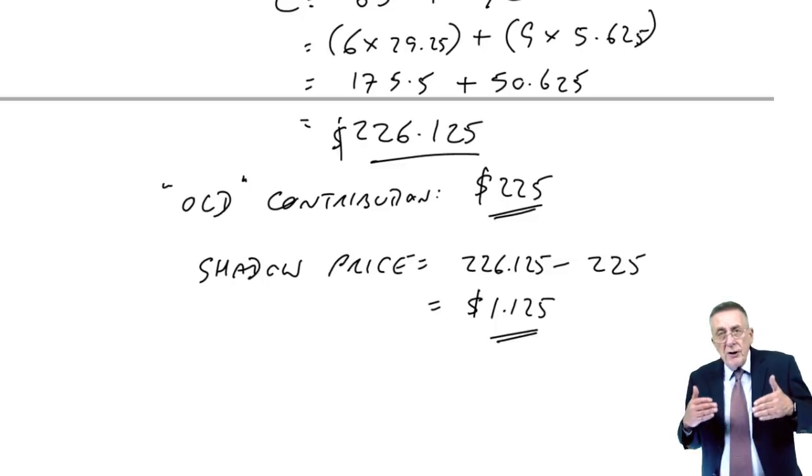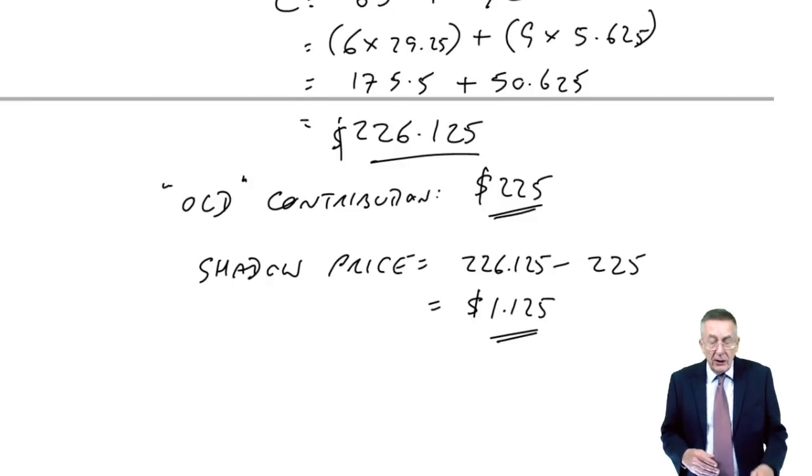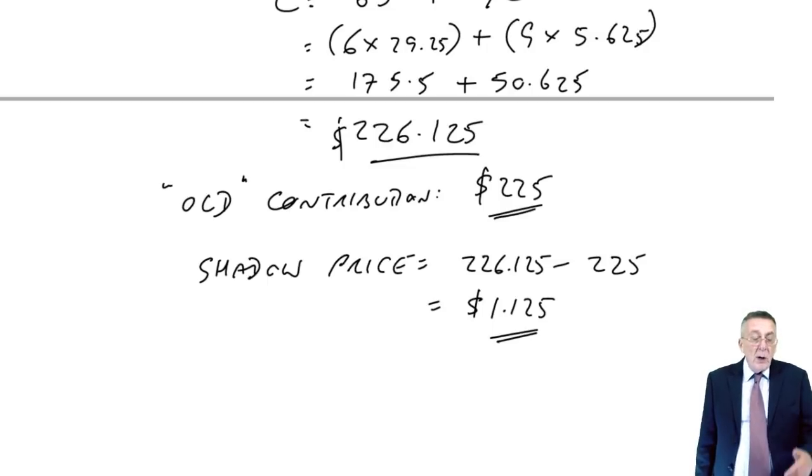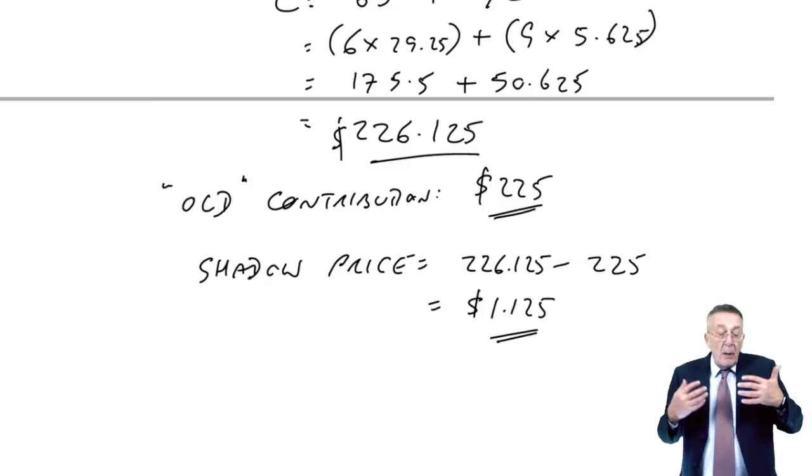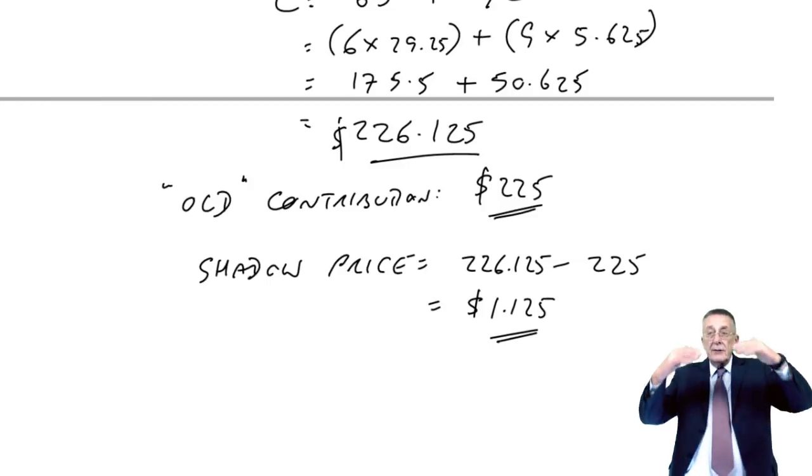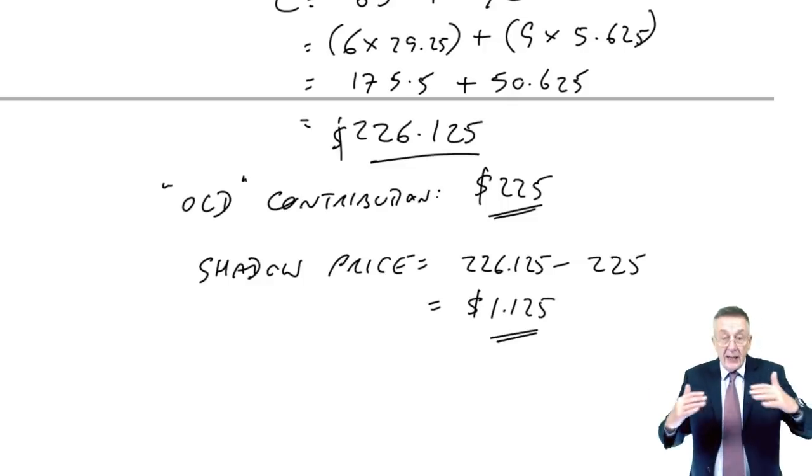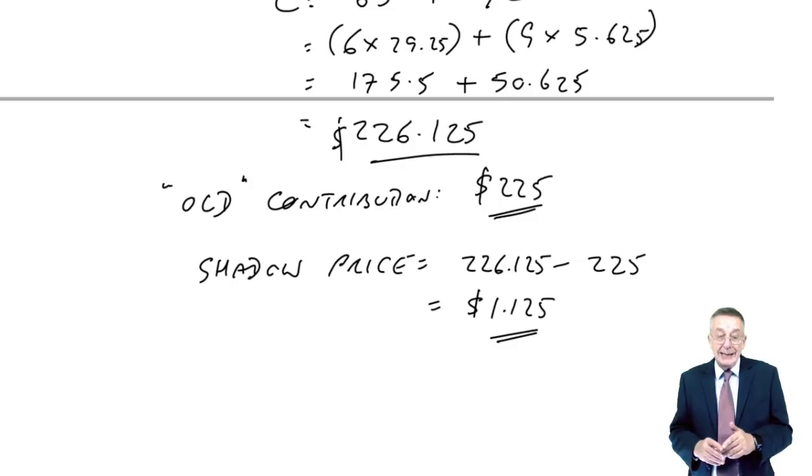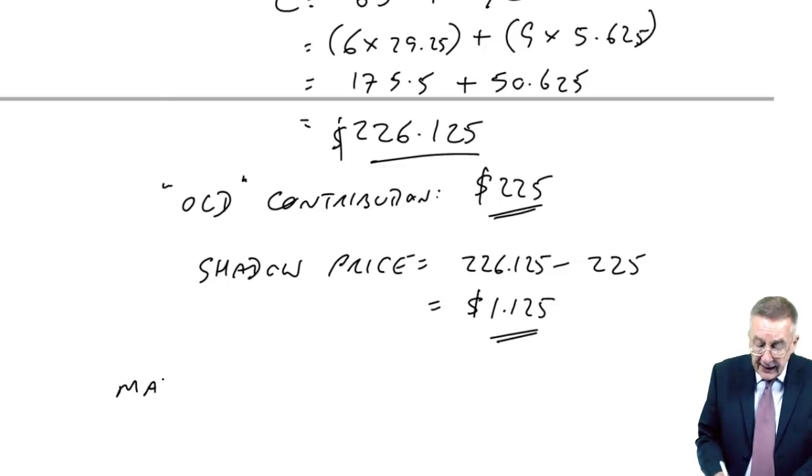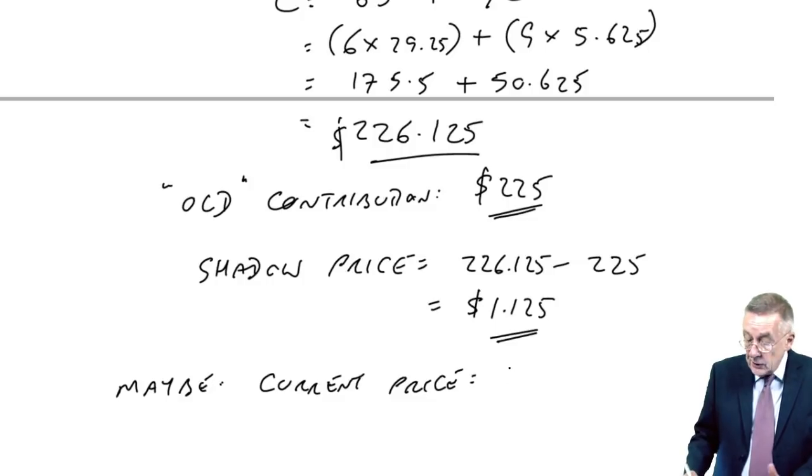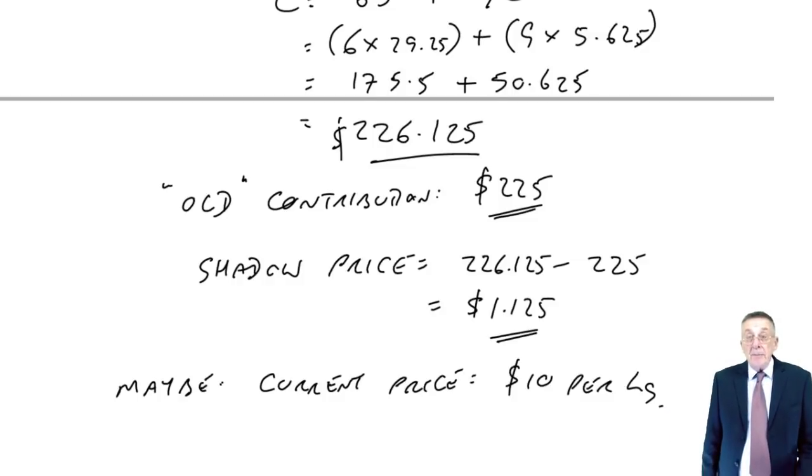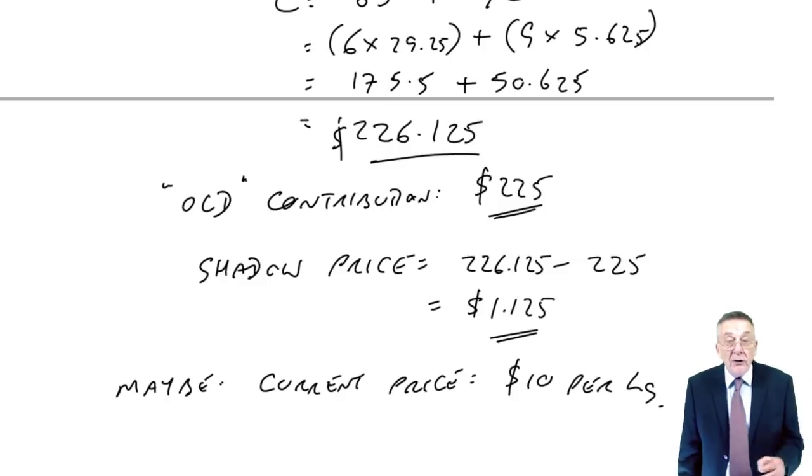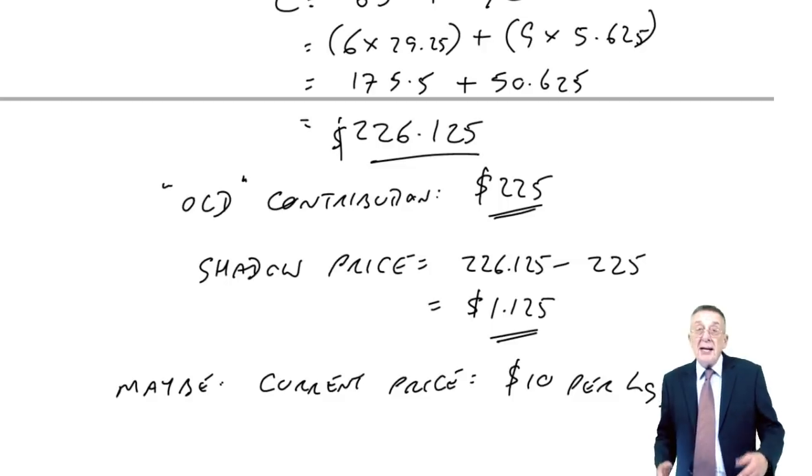You see, that is the extra contribution we would earn. But how was the contribution originally calculated? When we worked out the contributions, they were given. But when they were calculated, they'd have taken the selling price less of the costs, including the cost of materials, at the current price. Now, because we were given the contributions, I don't know what the current price was. Maybe, but I'm inventing a figure. Maybe the current price of materials is, ooh, 10 pounds a kilo. Now again, don't ask me where that figure came from. I just invented it. We hadn't needed to know it here, because they'd given us the contribution. But in working out the contribution, we'd have used $10 a kilo.